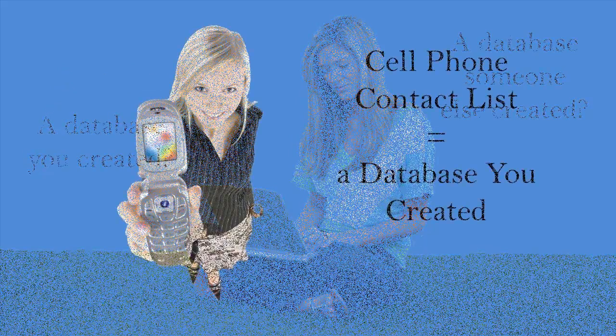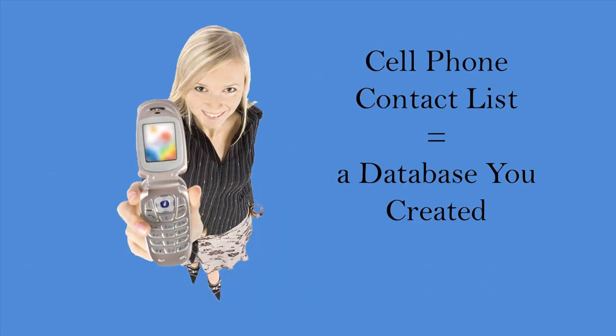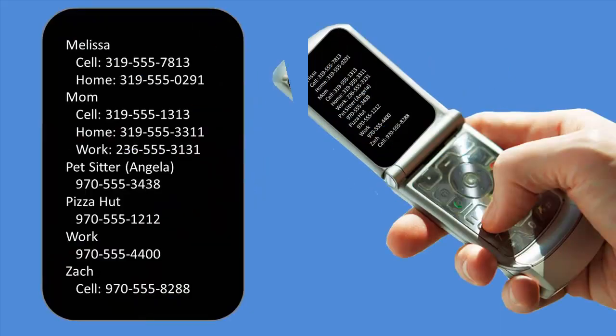Your cell phone is a database. It is a collection of information that includes names, phone numbers, addresses, and more. It is generally organized alphabetically by name.